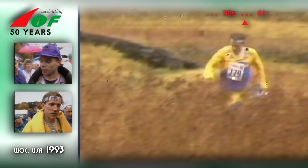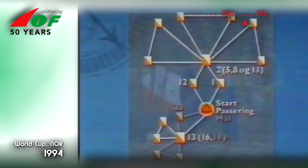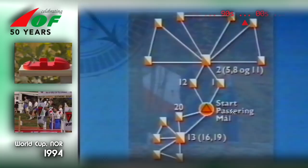The IOF experimented with new course formats in the World Cup — here, a course model for a mass start. In 1994, pinpunchers were still in use, but electronic punching had been introduced.